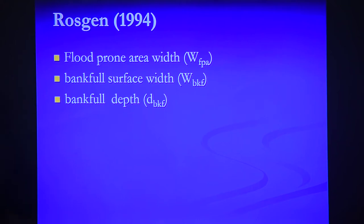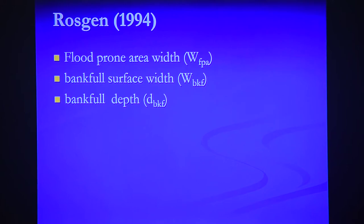Rosgen in 1994 talked about channel morphology, specifically three things: flood prone area width, bankfull width, and bankfull depth.